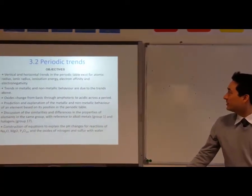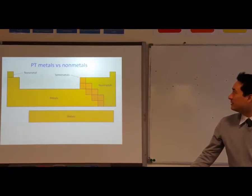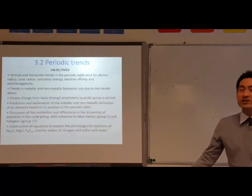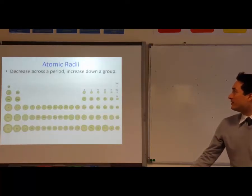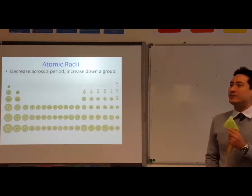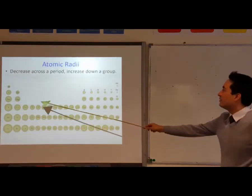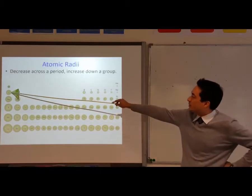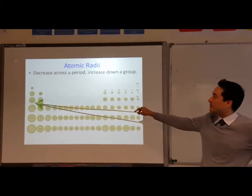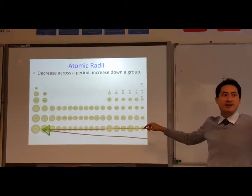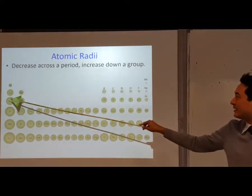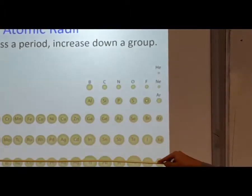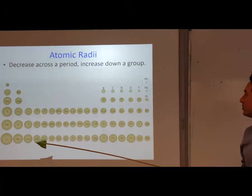Moving on to section 3.2 — atomic radius. Why does it get bigger as it goes down the group? It gets bigger because they're in larger shells. They're in a different shell on the outside, so that's why it gets bigger.